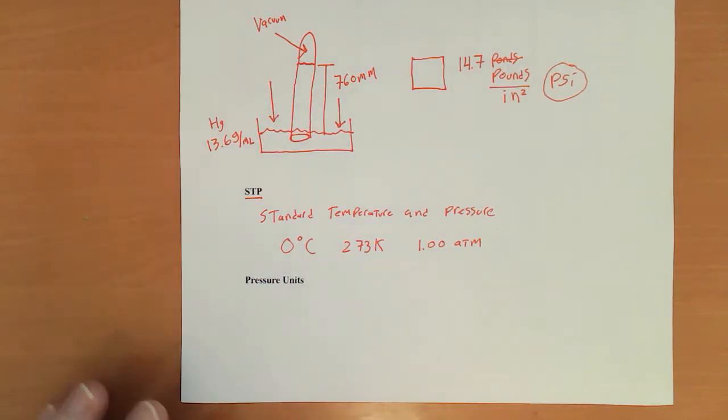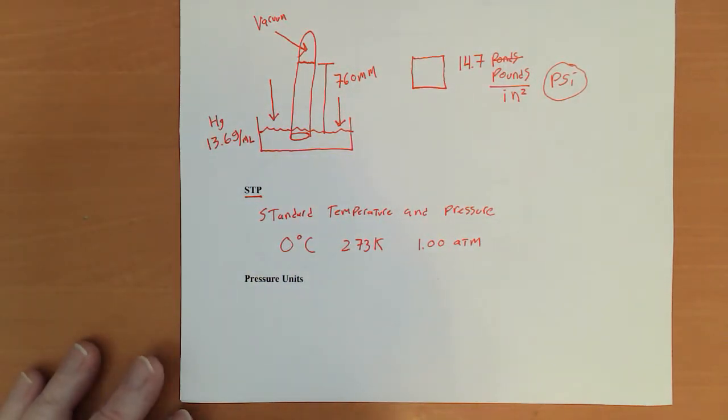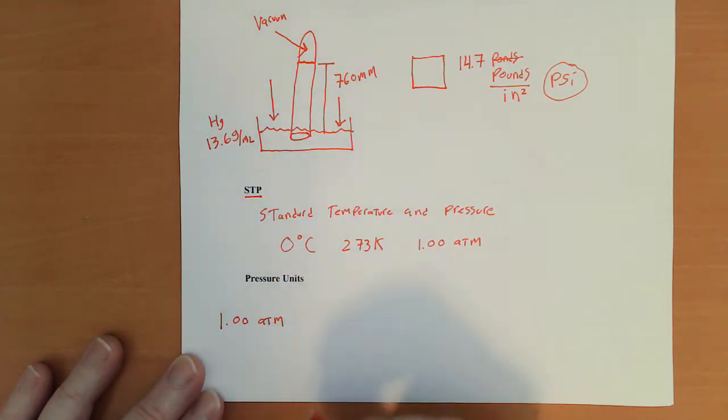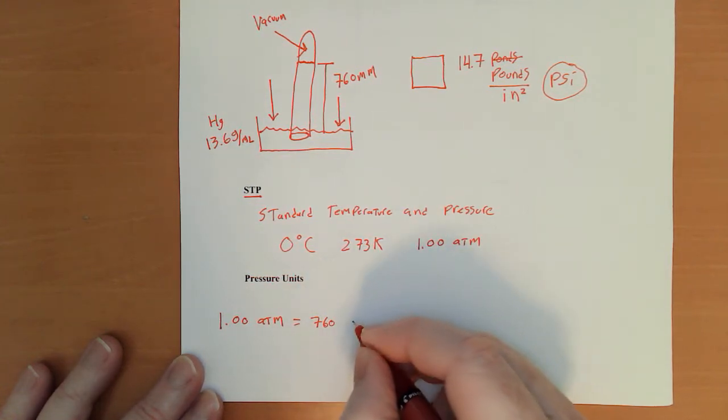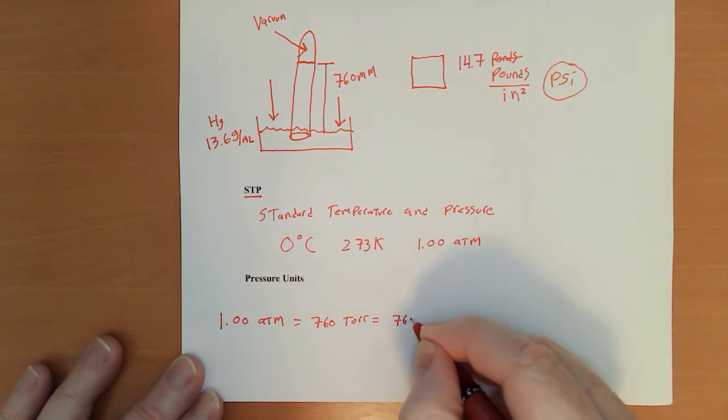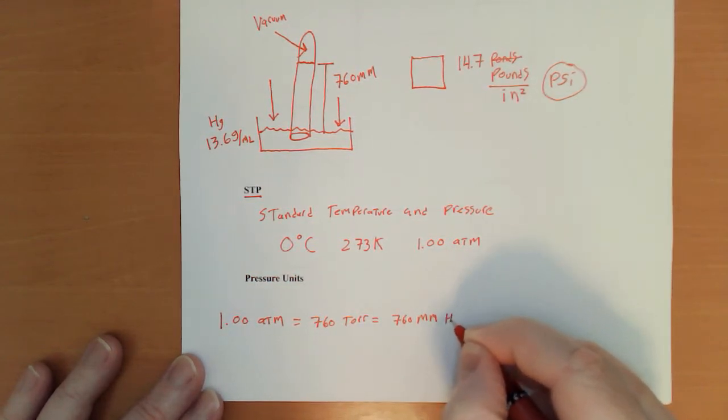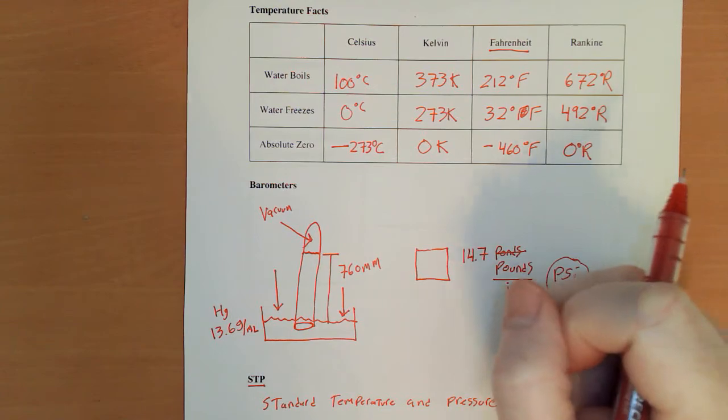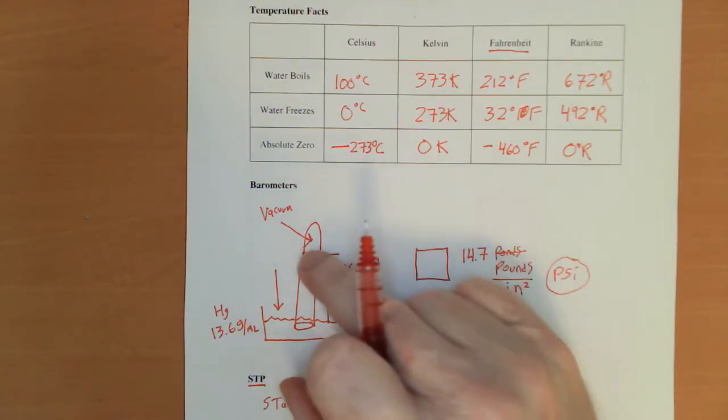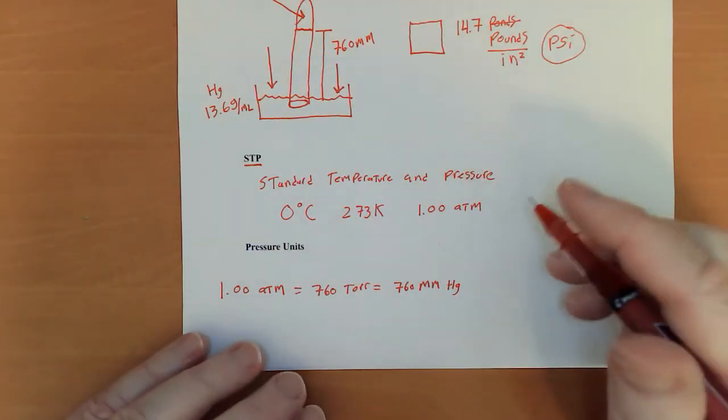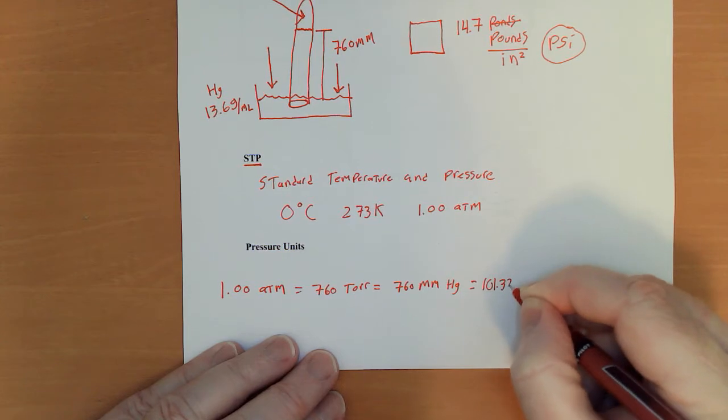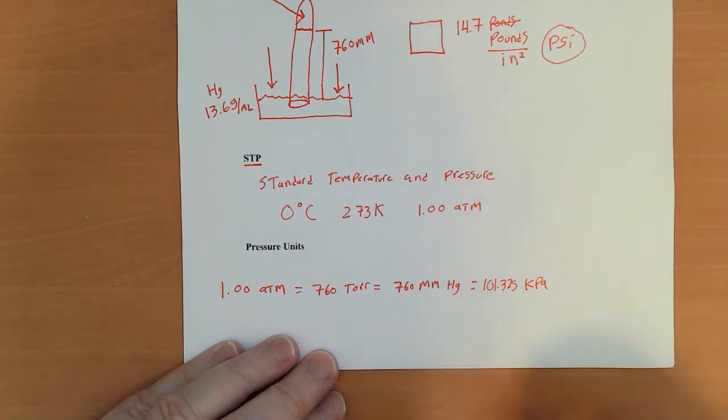Now, some pressure units. Like I said, this is a page mostly for reference. So, 1.00 atmosphere is 760 torr, which is 760 millimeters of mercury, and that comes from up here at the barometer, up 760 millimeters typically, lower pressure, it doesn't go as high, higher pressure, it goes a little bit higher.